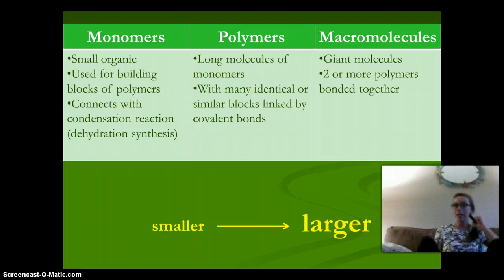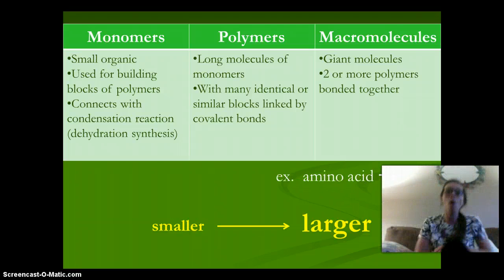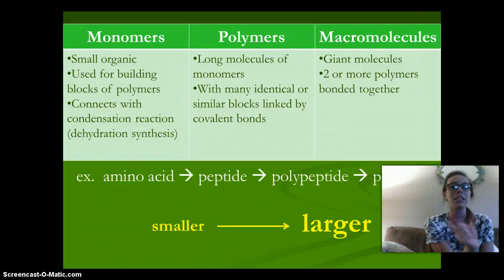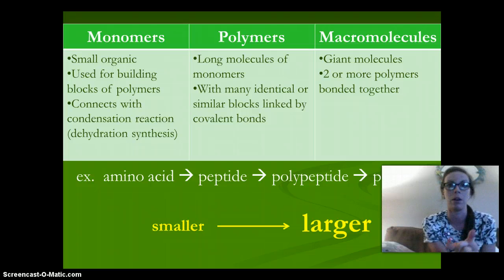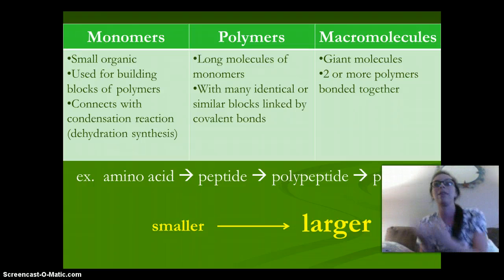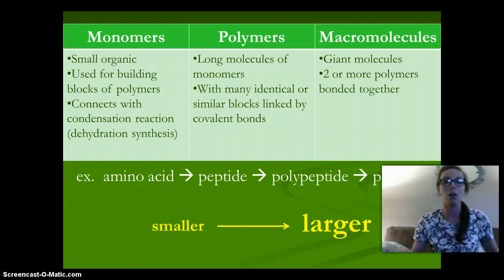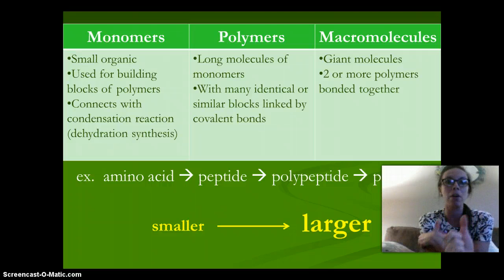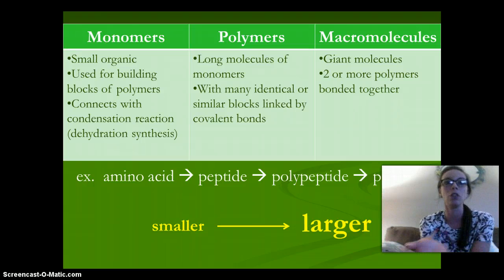Before we begin, let's talk about how these biomolecules form. We have our small subunits called monomers. Think of it as a single Lego. The single Lego is going to connect with other Legos to form a long unit, or building blocks basically. So the small unit is called a monomer, and it is used to create a polymer, or the long chain.